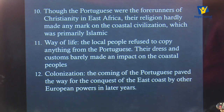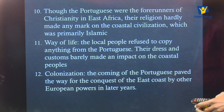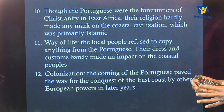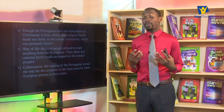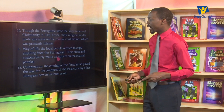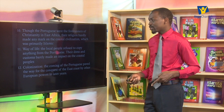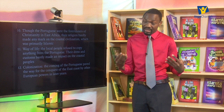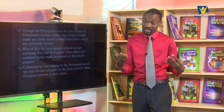Number eleven, the way of life of local people — they refused to copy anything from the Portuguese. Their dress and customs barely made an impact on the coastal people. That is how badly those people were viewed — to the point that even their culture was seen as bad. So the local people did not copy their way of dressing, eating, or any other customs.